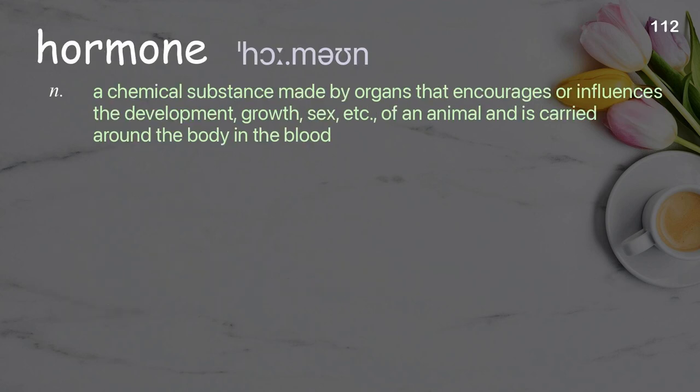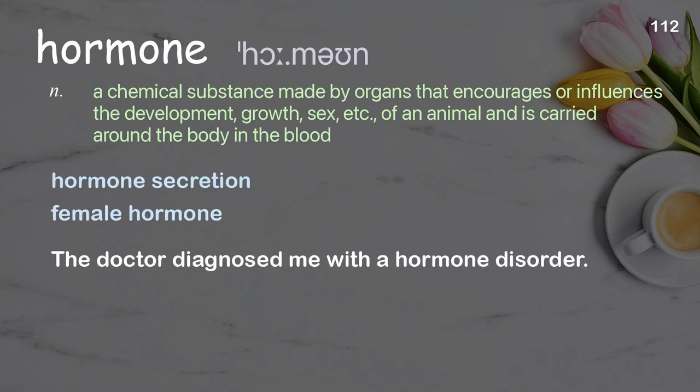Hormone: a chemical substance made by organs that encourages or influences the development, growth, sex, etc., of an animal and is carried around the body in the blood. Examples: hormone secretion, female hormone. The doctor diagnosed me with a hormone disorder.